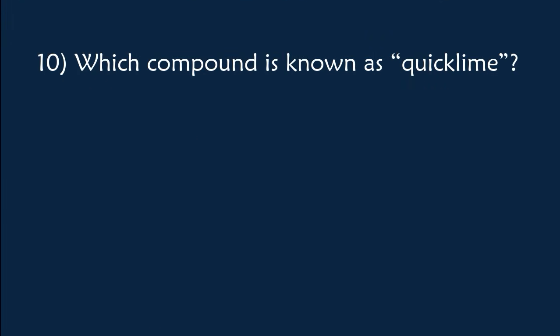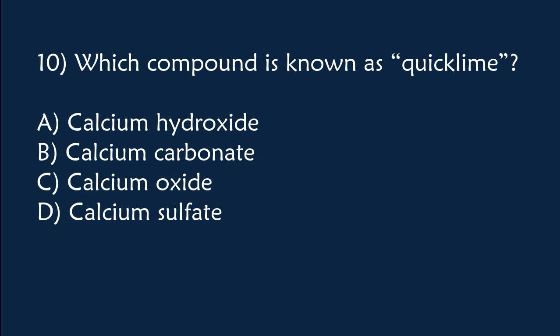Which compound is known as quick lime? A) Calcium hydroxide, B) Calcium carbonate, C) Calcium oxide, D) Calcium sulphate. The correct answer is Option C, Calcium oxide.